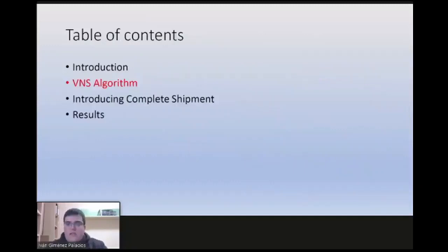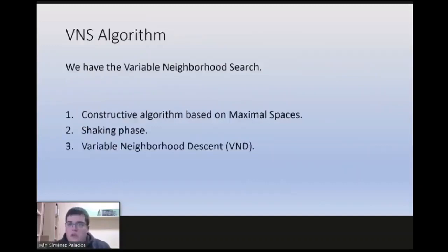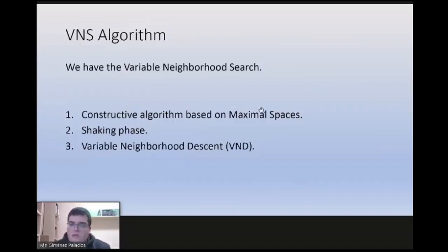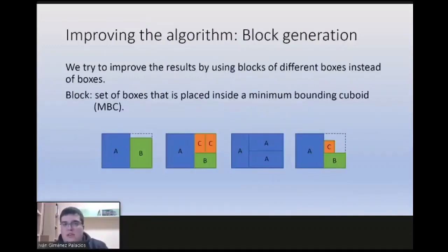We have a variable neighborhood search algorithm to solve the problem without the complete shipment constraint. This algorithm is described in three different parts: the constructive algorithm based on a maximal spaces algorithm, then the shaking phase, and finally a variable neighborhood descent. For the two last phases, we have neighborhoods defined from five different movements that consist in removing boxes and reconstructing the solution.